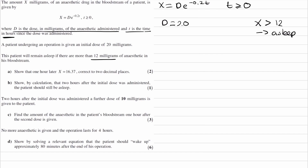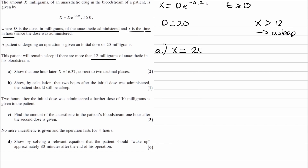For this first part, which says show that one hour later x is 16.37, we just use t equal to 1, put it into our equation, and work out what x is. So x would be 20 e to the minus 0.2 times 1, and that gives us 16.37 to two decimal places. And that's part A done.